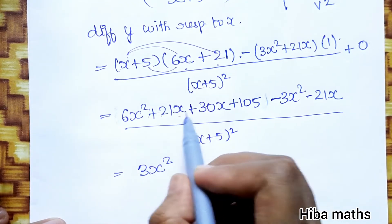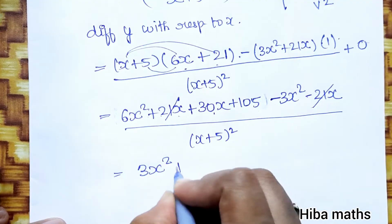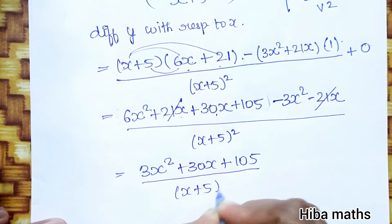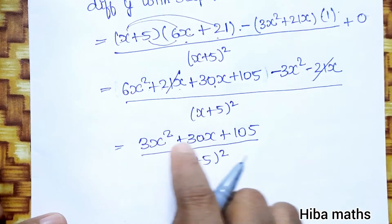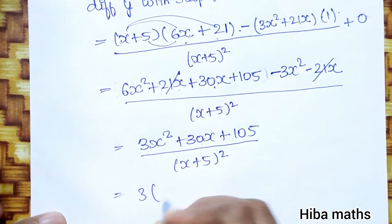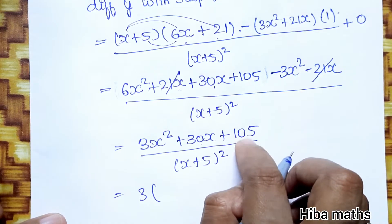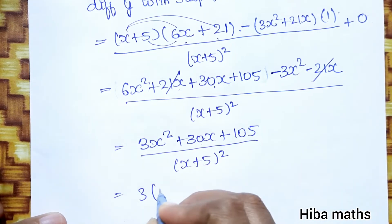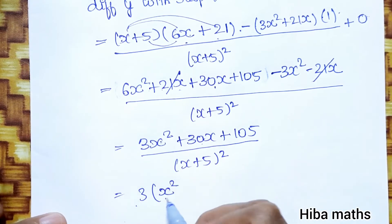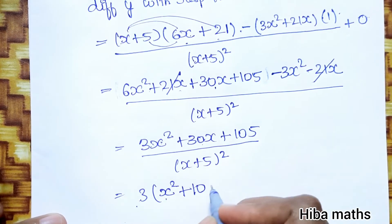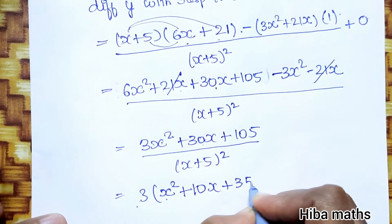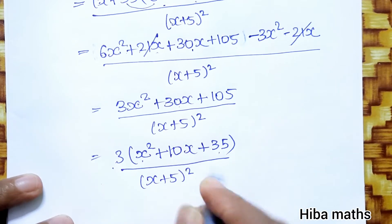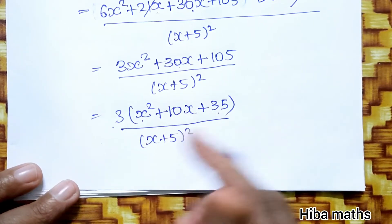After applying the u/v formula, the 21x terms cancel out, leaving 30x plus 105 in the numerator, divided by (x plus 5) whole squared. Taking 3 as a common factor gives 3 times (10x plus 35) divided by (x plus 5) squared.